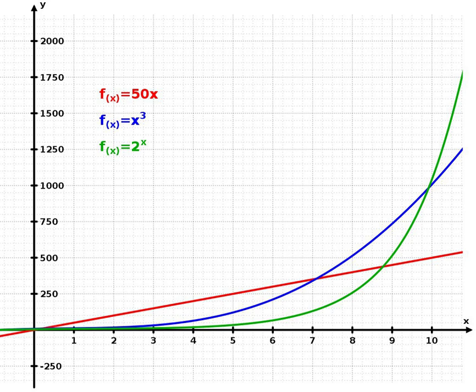The basic formula: A quantity x depends exponentially on time t if x(t) = ab^(t/τ), where the constant A is the initial value of x, x₀ = A, the constant B is a positive growth factor, and τ is the time constant, the time required for x to increase by one factor of B. If τ > 0 and B > 1, then x has exponential growth. If τ < 0, or τ > 0 and 0 < B < 1, then x has exponential decay.